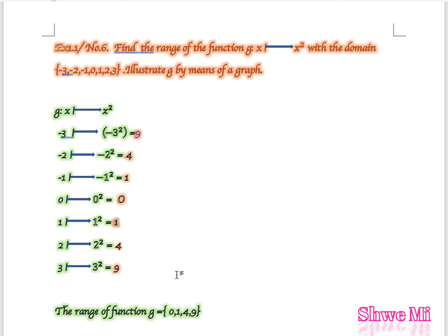We find the range of the function G, which maps x to x squared, with the domain {-3, -2, -1, 0, 1, 2, 3}. We will illustrate G by means of a graph.